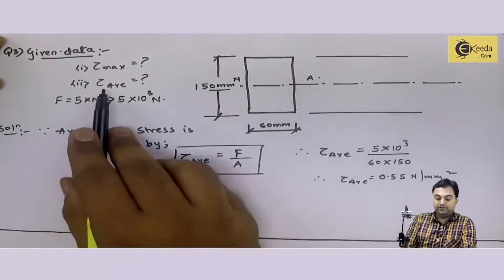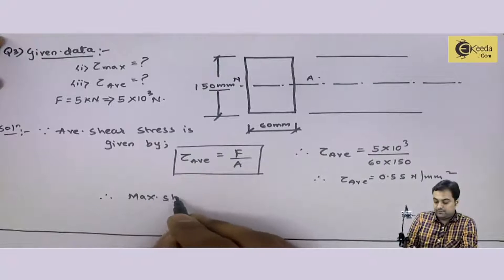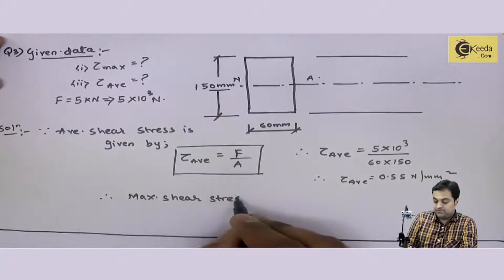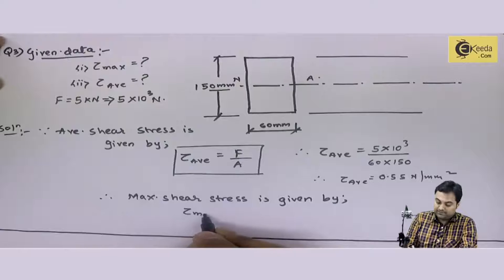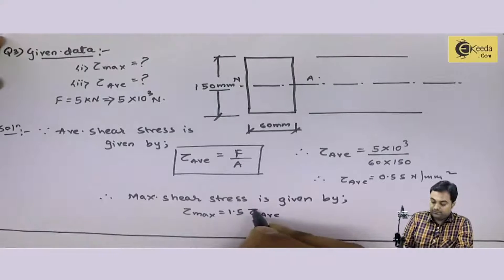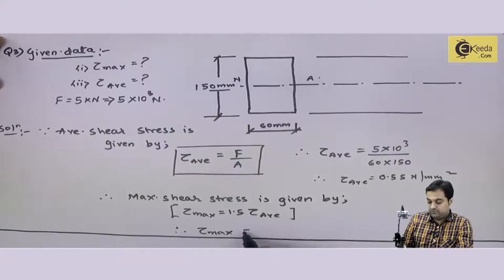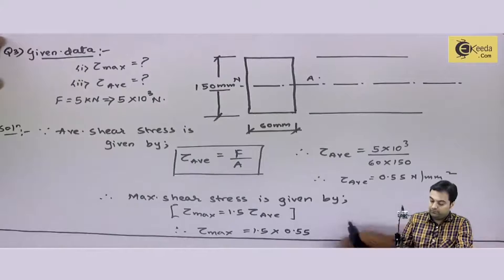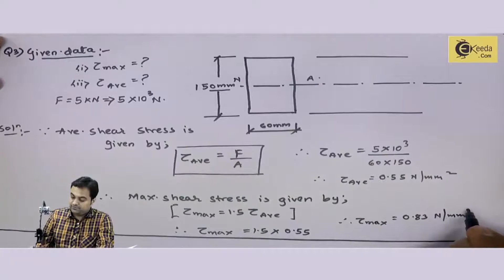After getting tau average, we can calculate tau max. Therefore maximum shear stress is given by tau max equals 1.5 times of tau average, 1.5 times of 0.55. So my answer of tau max is 0.83 Newton per mm square.